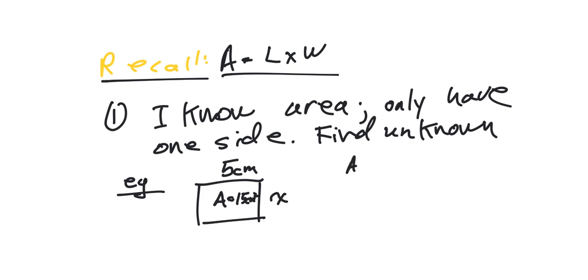How do we do that? Remember, when we did area, it was length times width. If you think about it, all I really need to do to find the other side, the unknown side, I need to take the area and divide it by the known side.